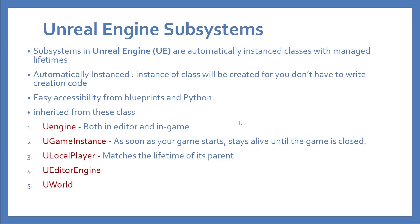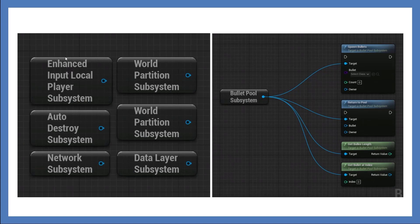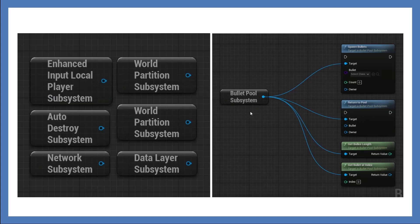For me I use the Game Instance subsystem — as soon as your game starts it stays alive until the game is closed. Note this is C++ only; you cannot make a subsystem from Blueprint. An example of built-in subsystems is the Enhanced Input Local Player Subsystem. The engine provides many subsystems like the Enhanced Input Local Player Subsystem, AutoDestroySubsystem, NetworkSubsystem, WorldPartitionSubsystem, and more. You can also make your own, like a BulletPoolSubsystem or a ScoringSubsystem.